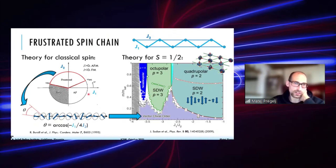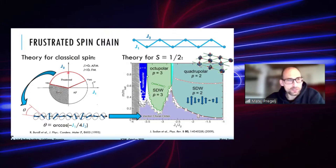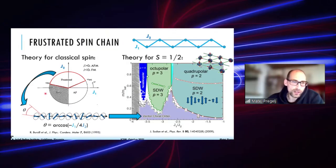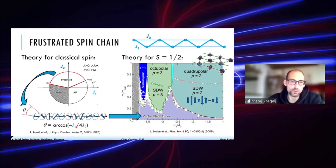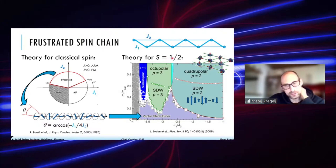With just nearest-neighbor interaction you can have antiferromagnetic or ferromagnetic ordering, but when you introduce J2 — the next-nearest-neighbor interaction — and if this interaction is antiferromagnetic, you impose frustration. For classical spins this results in spiral order with a pitch angle exactly determined by the ratio between J1 and J2.